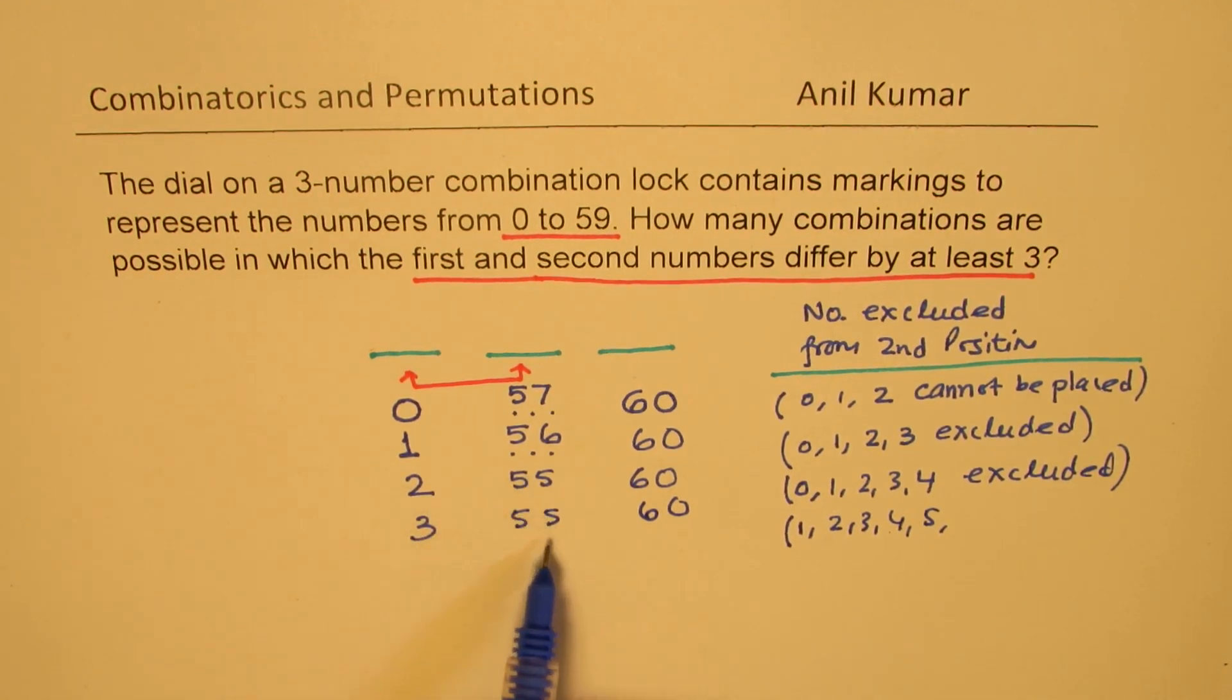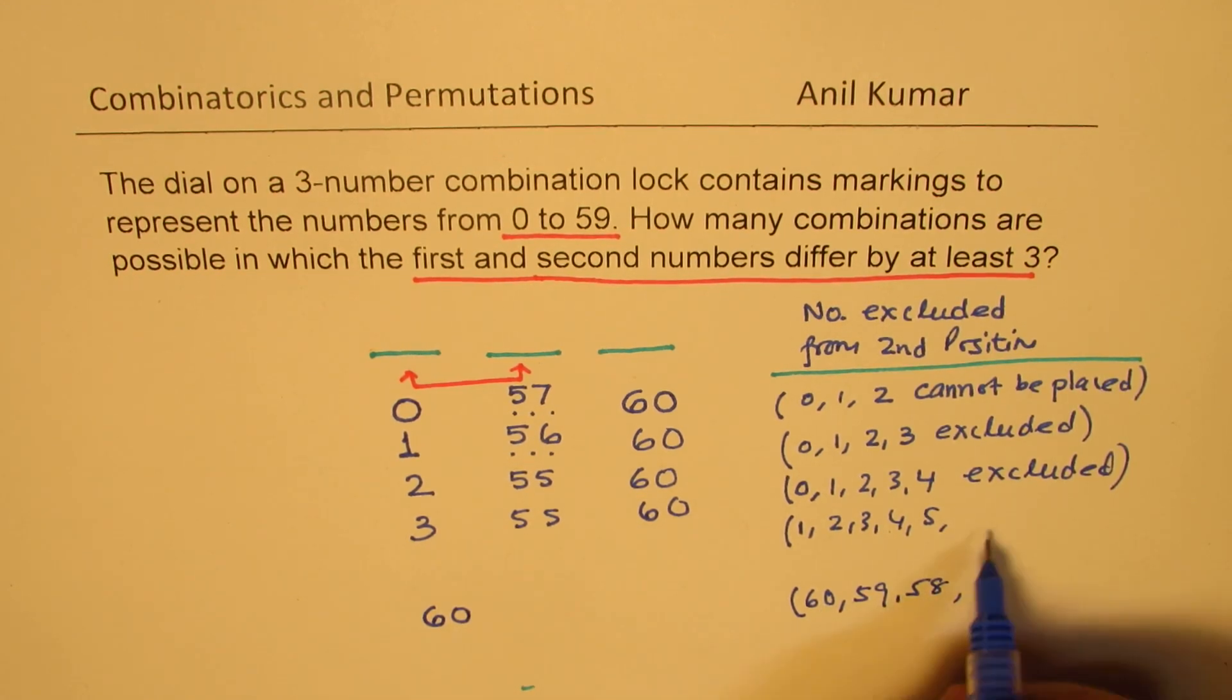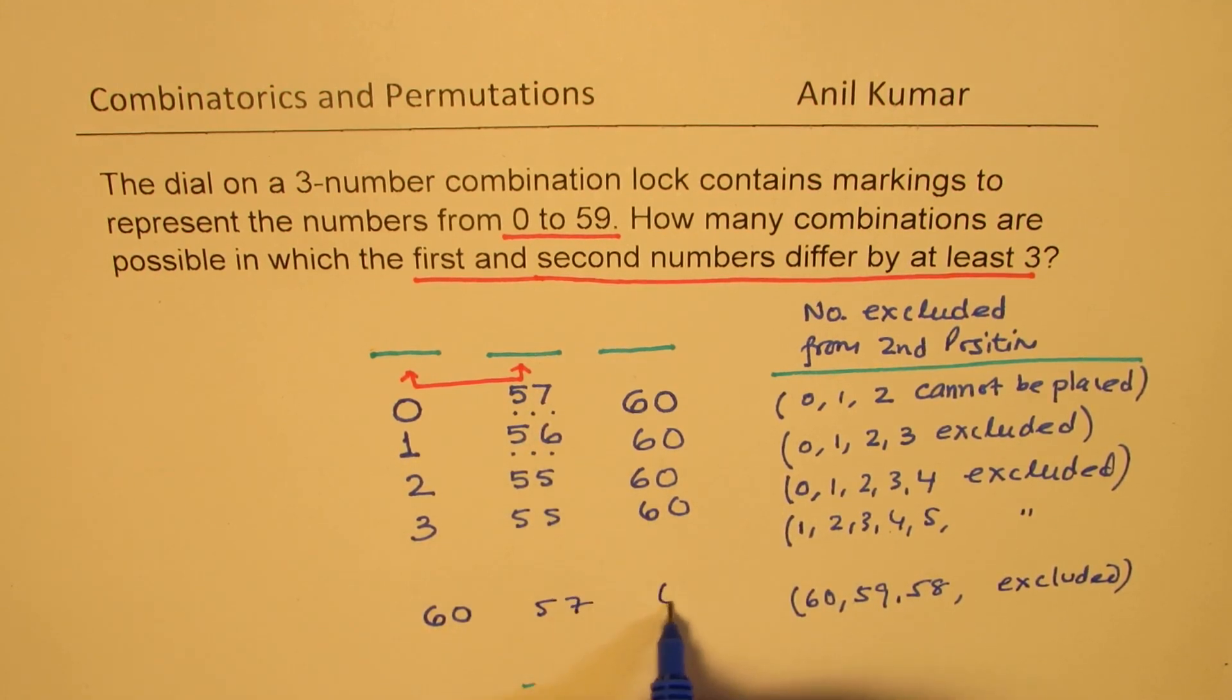How far can we get this combination? Well, let's begin from the last possibility. Last is we could place 60 here. If I place 60, in that case, the exclusions will be that I cannot place 60. Number here cannot be 59, 58, but we can place 57. That gives you a difference of 3. So 3 numbers cannot be placed. So if you take away 3, you get 57 here. And we get 60 there.